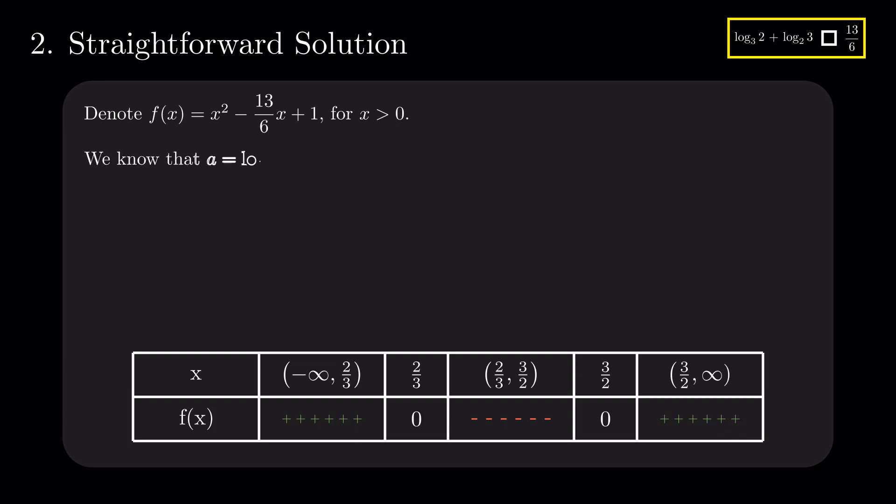We now have to find where on this axis is the value a equals to log base 2 of 3. Log base 2 of 3 is more than 1 and hence is also bigger than 2 divided by 3. We can see that if log base 2 of 3 would be less than 3 divided by 2, then 3 would be less than 2 to the power of 1.5, which is equivalent to 9 less than 8, clearly a false statement. So, log base 2 of 3 is strictly greater than 3 divided by 2.